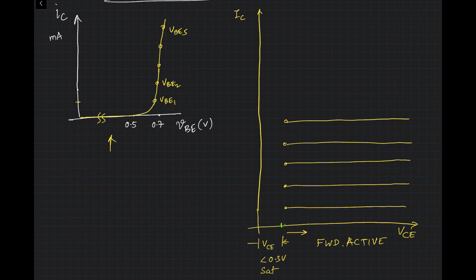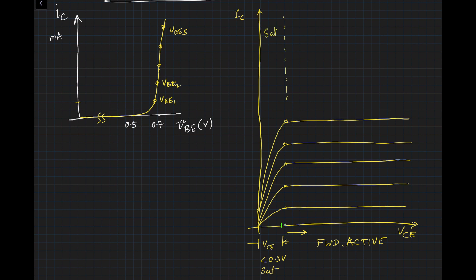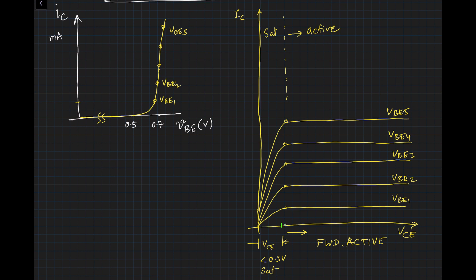When VCE = 0, the collector current must go to zero, so all curves fall off in the saturation region. In the ideal model, the collector current is completely independent of VCE in the active region. In reality, that is not the case — we need to look at what actually happens in the transistor cross-section.